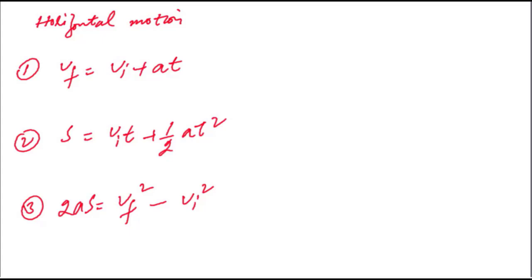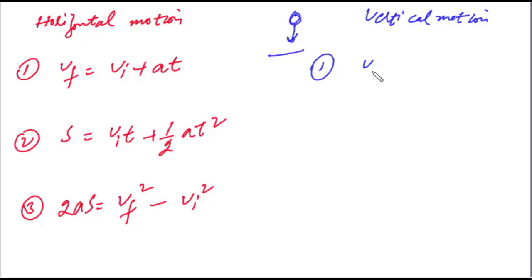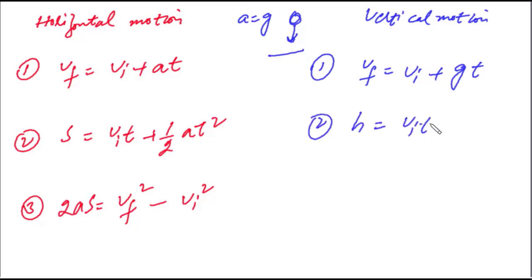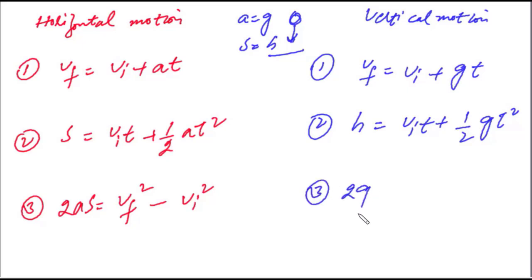اگر ہم انہی equations کو vertical motion کے لئے لکھنا چاہیں — یعنی اگر کوئی body freely fall کر رہی ہو — تو ان میں تھوڑا سا change آ جائے گا۔ یہ بن جائیں گی: vf = vi + gt، دوسری: h = vi·t + ½gt²، اور تیسری: 2gh = vf² − vi²۔ مطلب ہم نے a کو g سے اور distance s کو vertical height h سے replace کر دیا۔